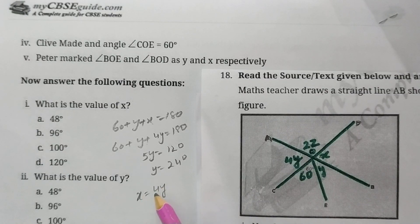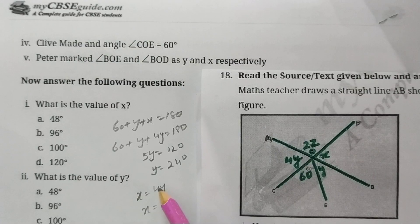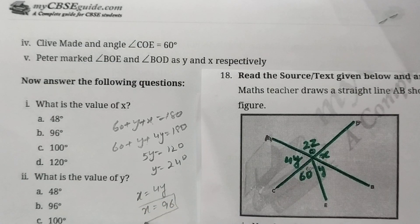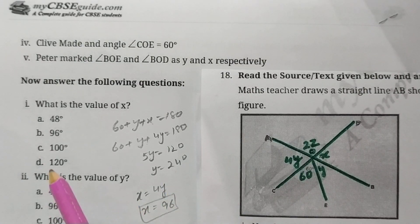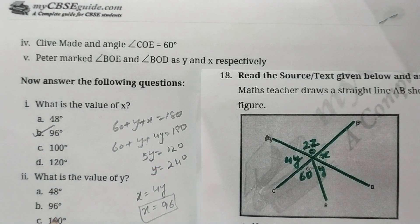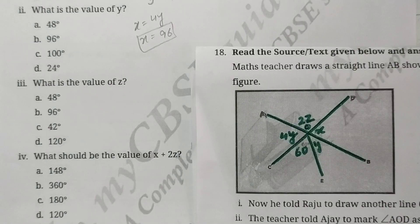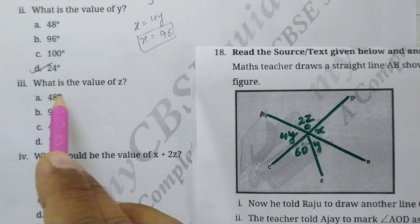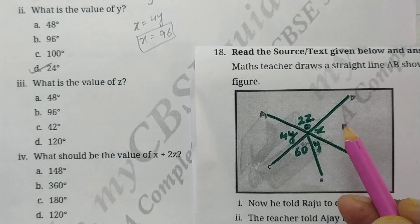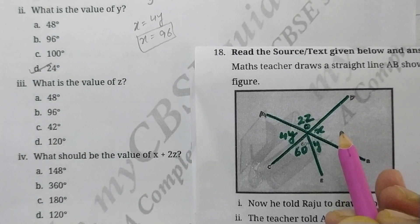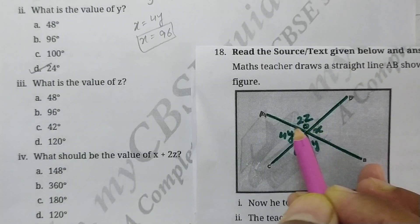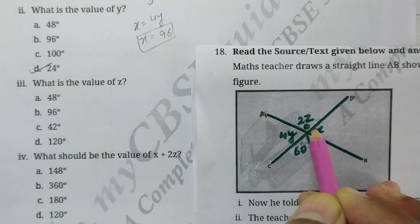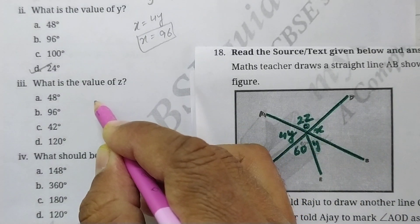Next question: What is the value of z? So for finding z, you can see here x and 2z are forming linear pair. X and 2z are forming linear pair, so it means x plus 2z is 180 degrees.